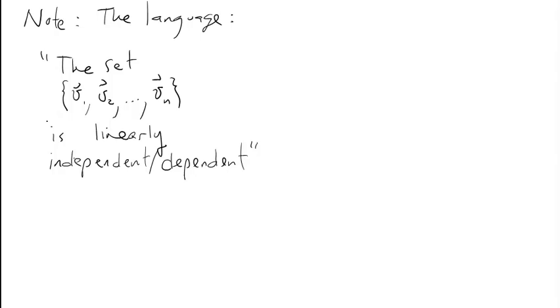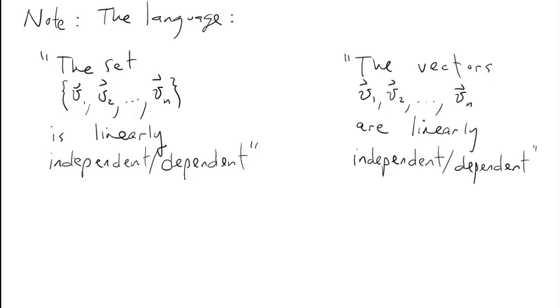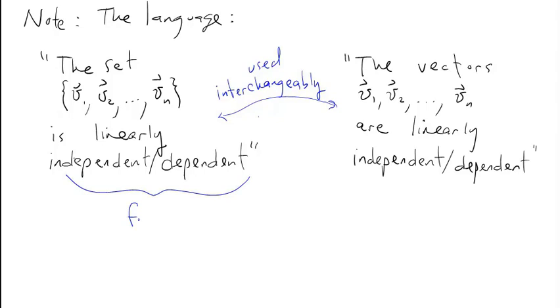Note the language: the set v1 down to vn is linearly independent or dependent, and the language the vectors v1 down to vn are linearly independent or dependent, is used interchangeably. The language on the left is more formal, and the language on the right is sort of informal because, after all, linear independence or dependence really just refers to a set — a full collection of vectors, not individual vectors.